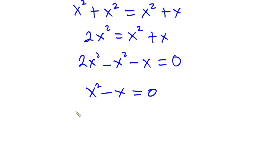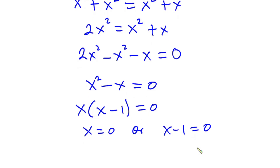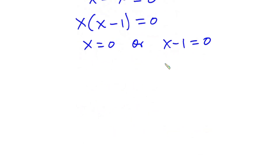We can factor x out from x squared minus x, giving us x times (x minus 1) equals 0. This means that x equals 0, or x minus 1 equals 0. Making x the subject of that second equation, we get x equals 1. So according to contestant B, x equals 0 or x equals 1.